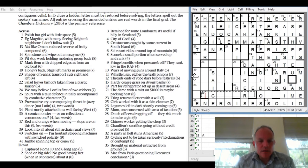39: Look into all about still archaic rural views. I think the definition will be rural views. 36 across: A comic monster all on reflection a venomous one. It's unusual for a four-letter phrase to be two words. On reflection will mean going backwards. Some sort of comic monster, a monster in a comic.